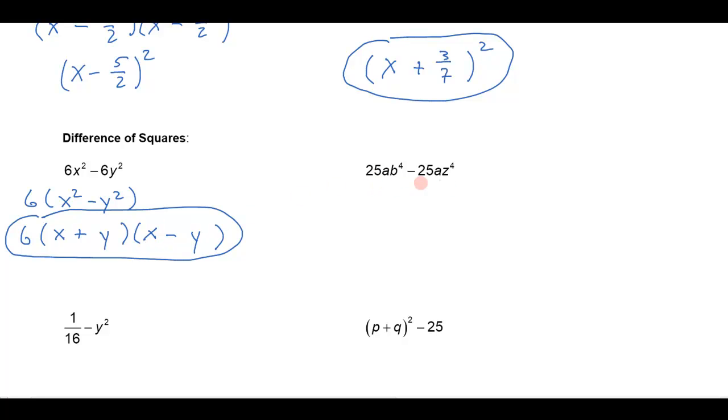Here's another example. Notice there is a common factor here of 25a that I can bring out. That leaves me b to the fourth minus z to the fourth and this is a perfect square. So let's go ahead and factor that as b squared minus z squared times b squared plus z squared. That's the sum difference of terms. Here's the sum of terms and here's the difference of those terms b squared and z squared.